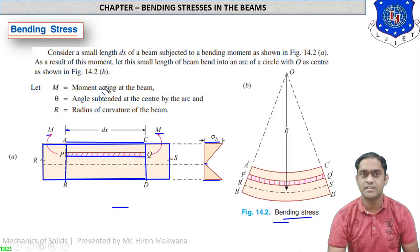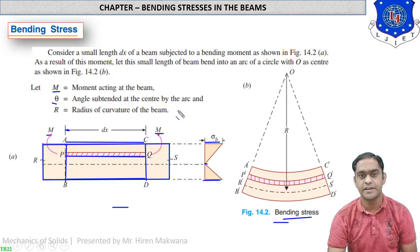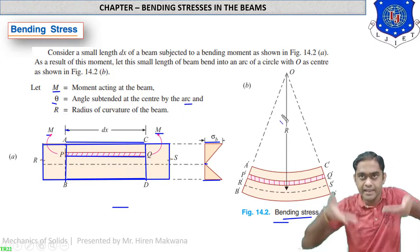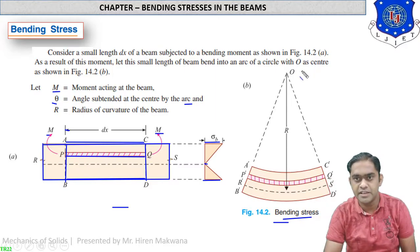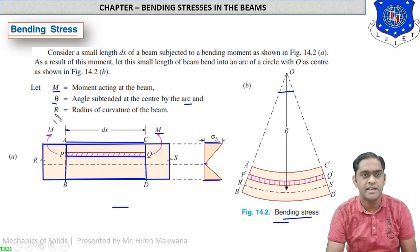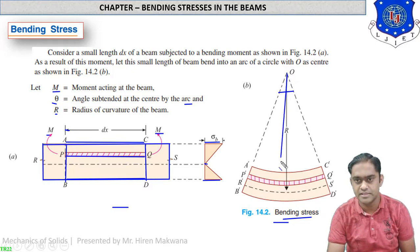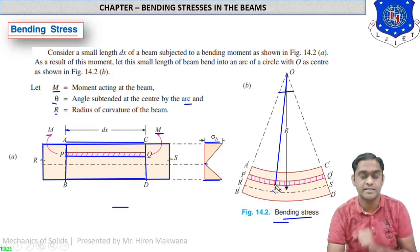Let us understand some notations. M is the moment acting on the beam. Theta is the angle subtended at the center by the arc — when the beam bends, there is an imaginary center O at which the angle theta is subtended. R is the radius of curvature of the beam — from this center, R is the radius of curvature up to the neutral axis.